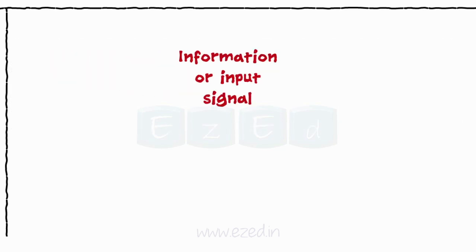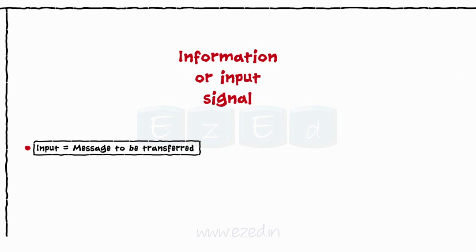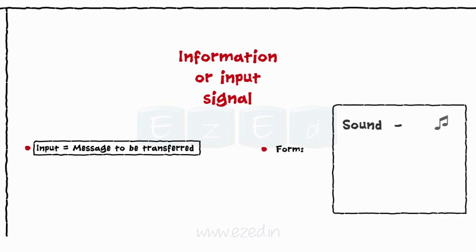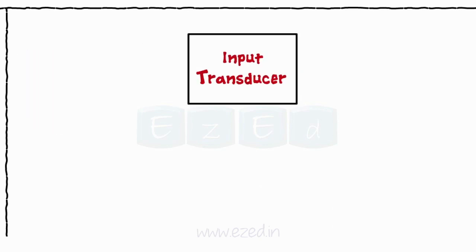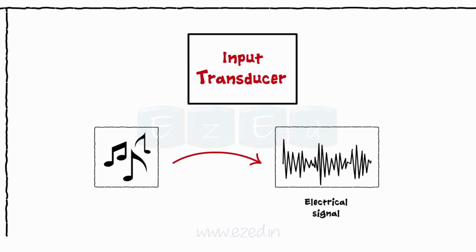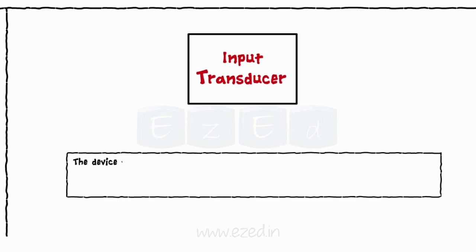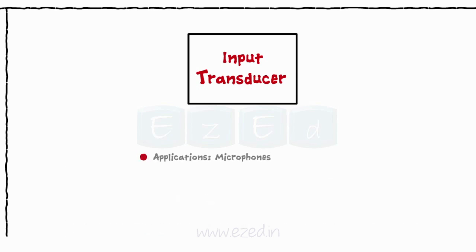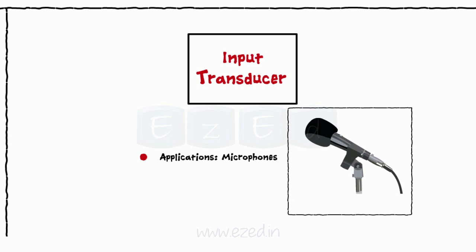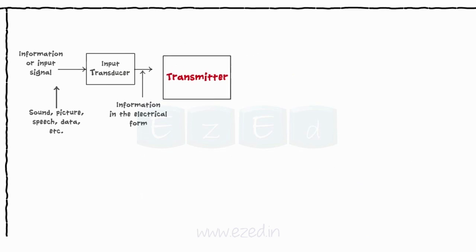First is an input signal. The message to be transferred acts as an input to a communication system. This signal can be in any form like a sound signal, picture, speech, data, video file, etc. The second block is an input transducer. Before transmitting the input signal, it is first converted into an equivalent electrical signal from its original form. The device which converts an input signal of any form into an electrical signal is called an input transducer. Input transducers like microphones are very commonly used in communication systems.